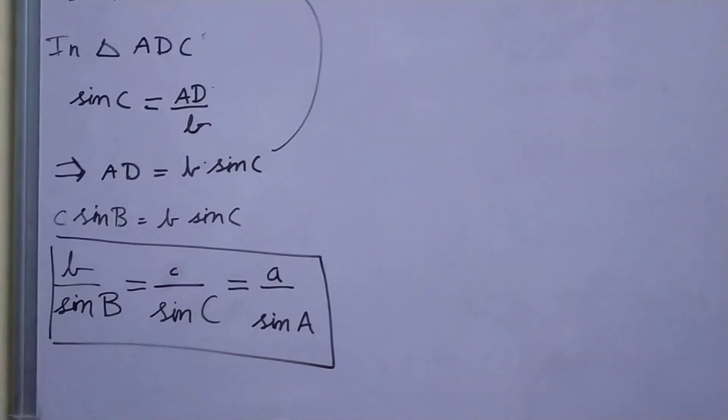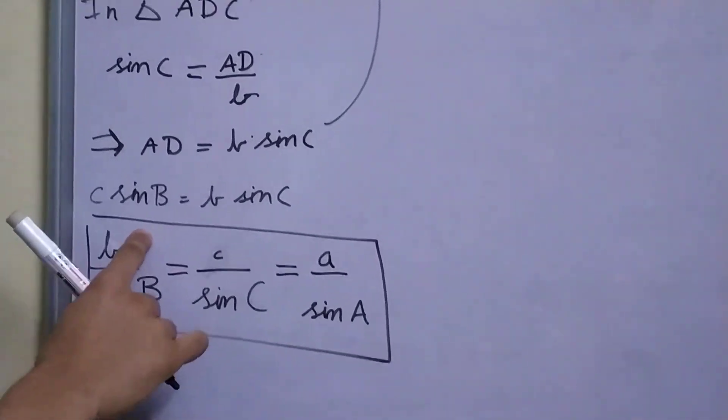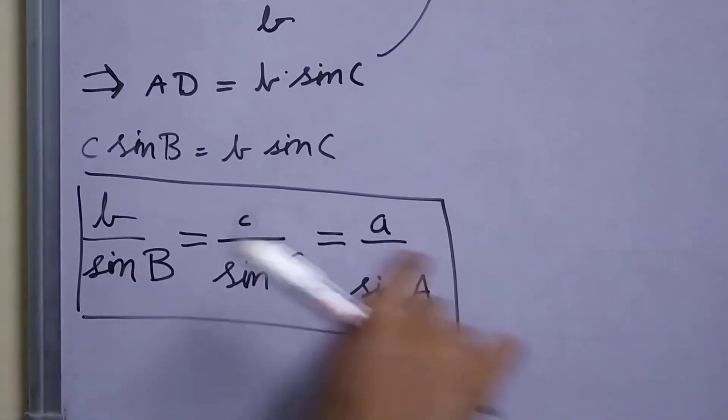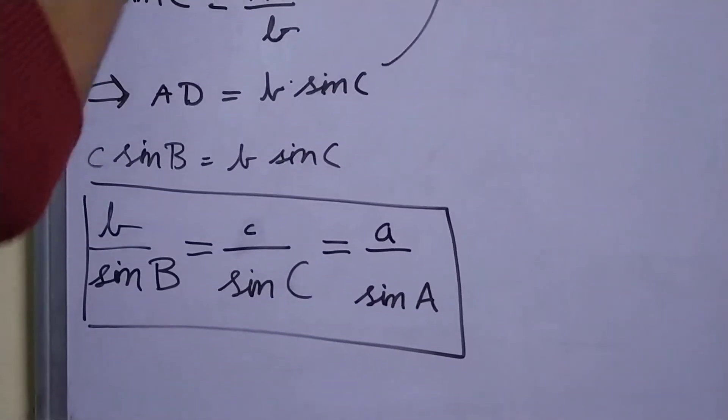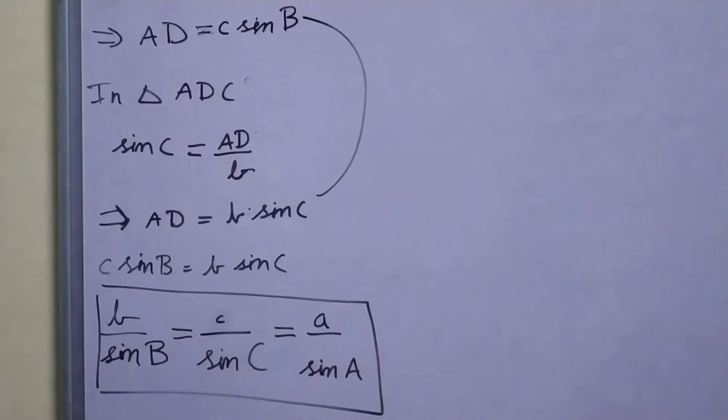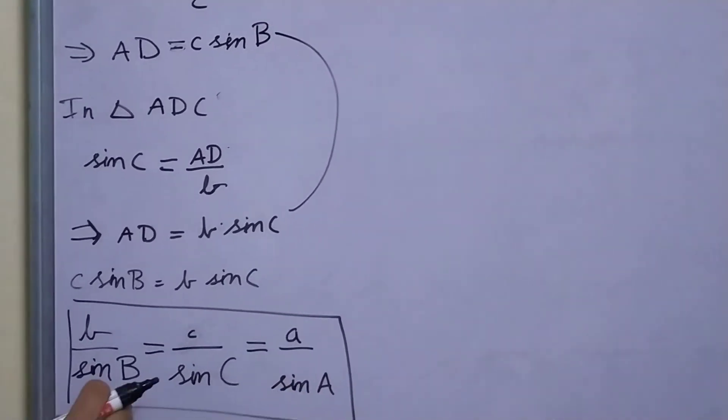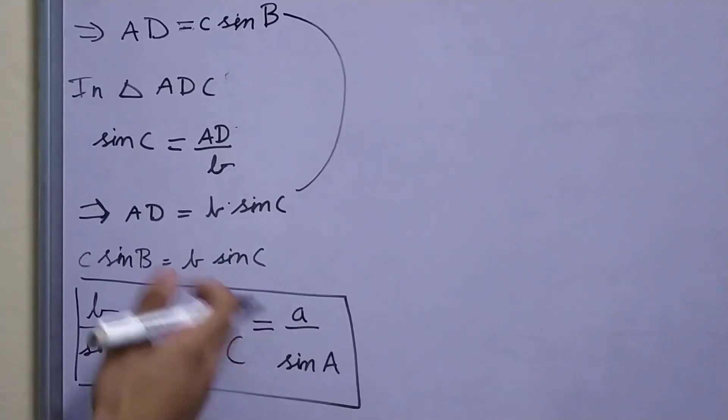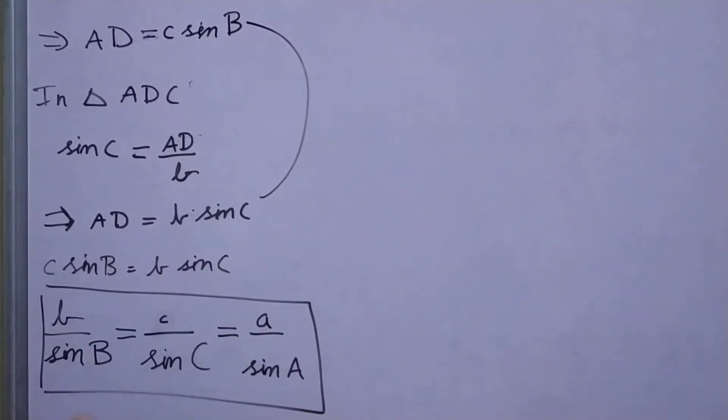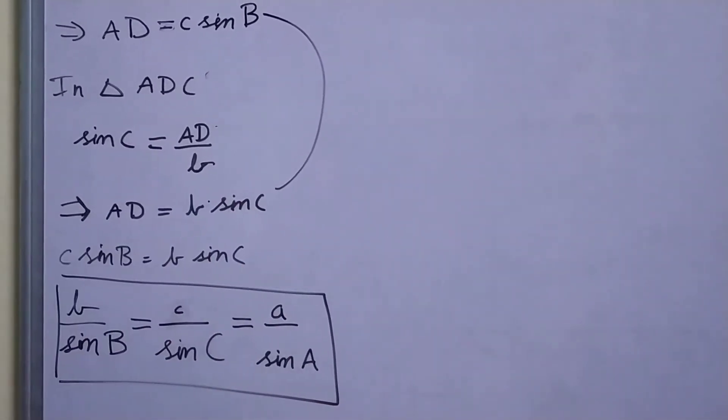It basically says that you take the side, divide it by the sine of the opposite angle, and this ratio remains constant in a triangle. Using this you can find out the side lengths if you're given angles and one side, or you can find the other angles as well.